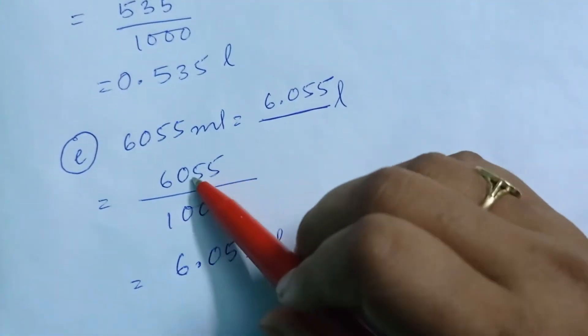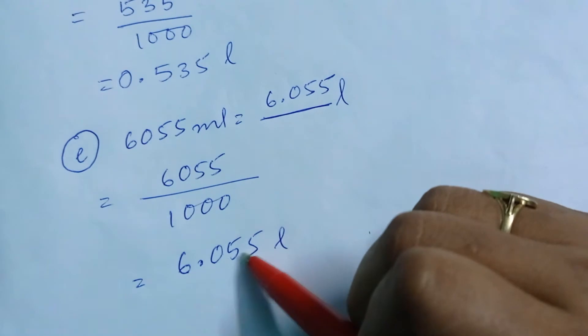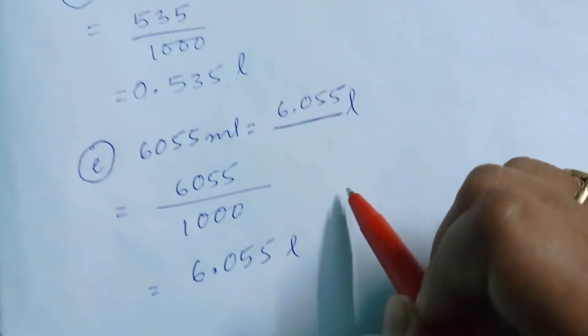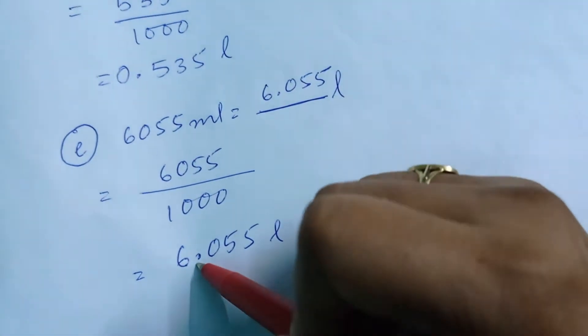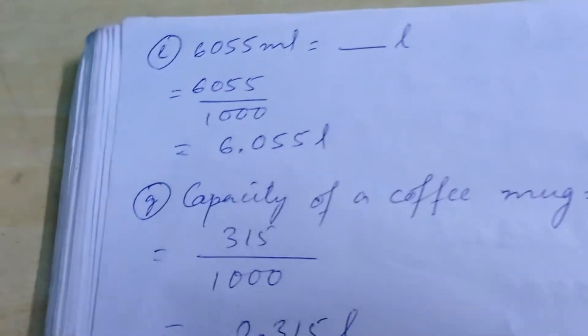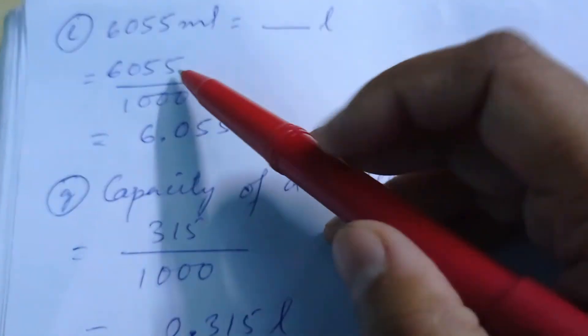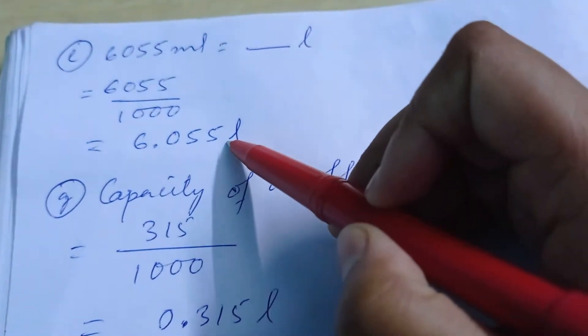For question E: 60055 divided by 1000 — milliliter to liter. Three zeros, so before three numbers from the back: 1, 2, 3 — put the point there, giving 60.055 liter. Same thing again: 6055 divided by 1000 is 6.055 liter.